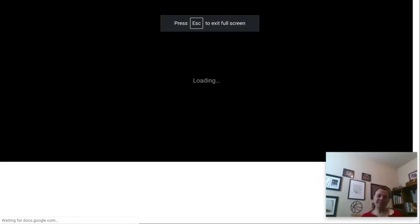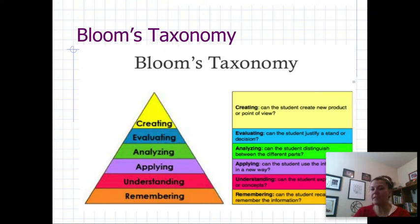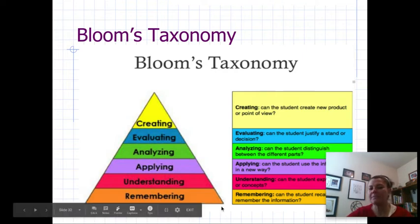All right, so this is Bloom's Taxonomy. Feel free to pause me and take notes, because the taxonomy has quite a bit of words on it. It's a short lecture, so we only have three slides to get through. Bloom's Taxonomy is a theory of how we basically learn and think. This is one of the main theories that rules education, or is what we would call a pedagogical theory of education. We build upon this triangle.